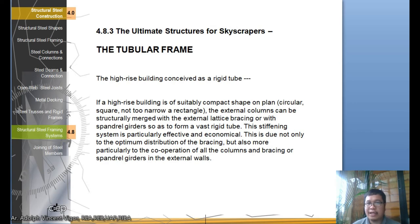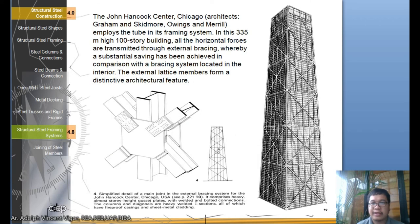Let's go to the ultimate structures for skyscrapers - the high rise building conceived as a rigid tube, the tubular frame. If a high rise building is of suitably compact shape on plan, circular or not too narrow in the rectangle, the external columns can be structurally merged with external lattice bracing or with spandrel girders so as to form a vast rigid tube. This stiffening system is particularly effective and economical. This is due not only to the optimum distribution of the bracing, but also more particularly to the cooperation of all the columns and bracing or spandrel girders in the external walls.